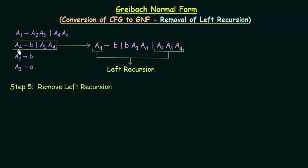This production A4 gives B, A1. A4 was converted to this form after following step number 4. And here we see that A4 is giving A4, A4, A4. This part is known as a left recursion — A4 is calling itself over here. And this is what we need to resolve or remove in order to get the required Greibach Normal Form.